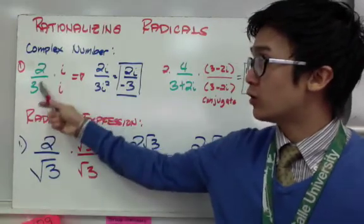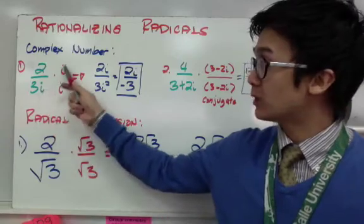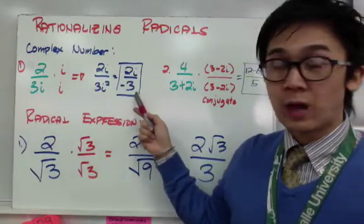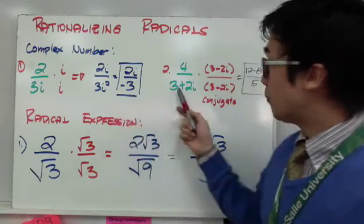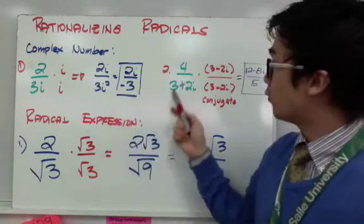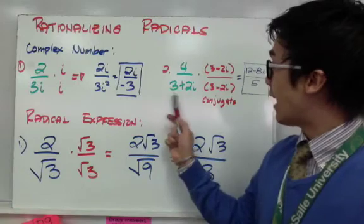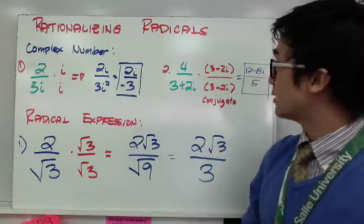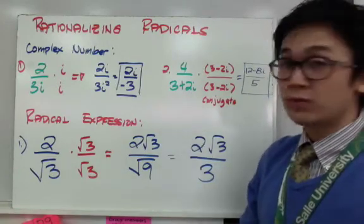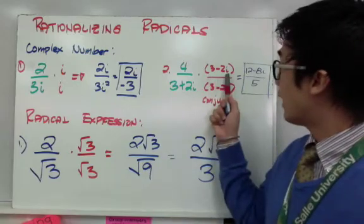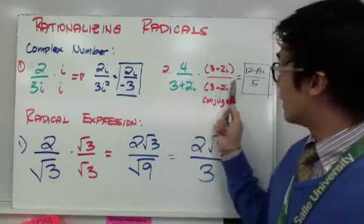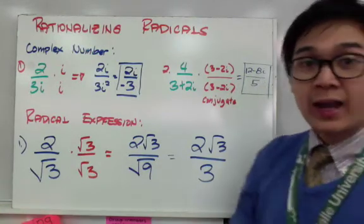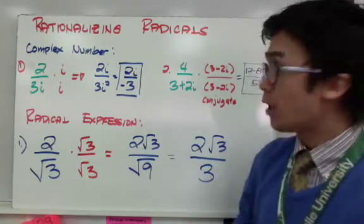For number one, 2 over 3i can be rationalized by multiplying by i on both sides, so you'll have 2i over negative 3. For number two, I have 4 over 3 plus 2i. Since you have a real number and an imaginary number, you need the conjugate. The conjugate of the denominator is 3 minus 2i, and by multiplying by the conjugate, you'll end up with 12 minus 8i all over 5. That's how we rationalize using a complex number.